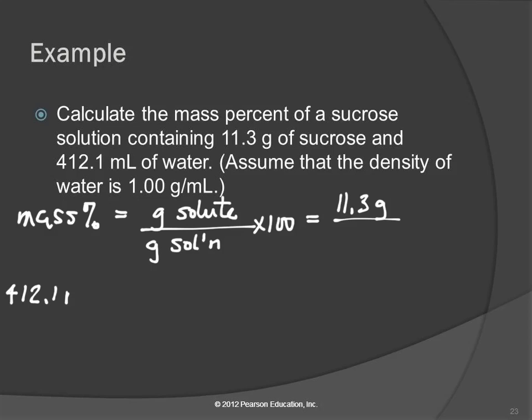412.1 milliliters. The density allows us to convert to grams. We're going to put the units in so they work out. Milliliters are going to cancel milliliters, and we're left with grams in the numerator. The density is 1.00 grams per milliliter. And now that math we don't need a calculator for. That's 412.1 grams. That is the mass of the water.